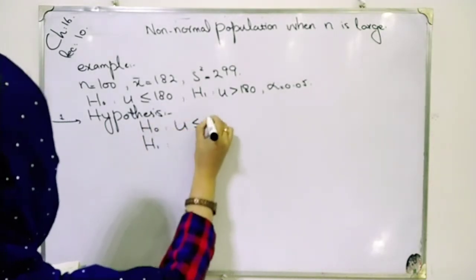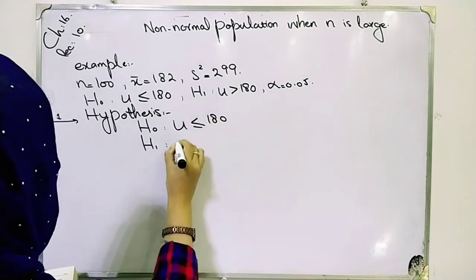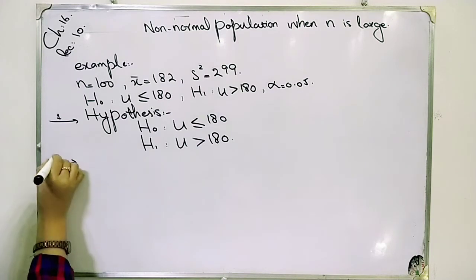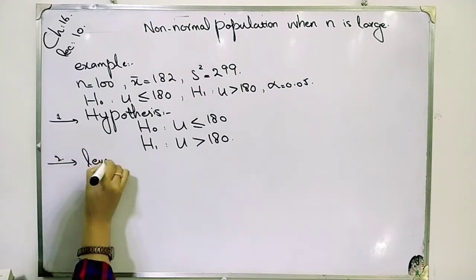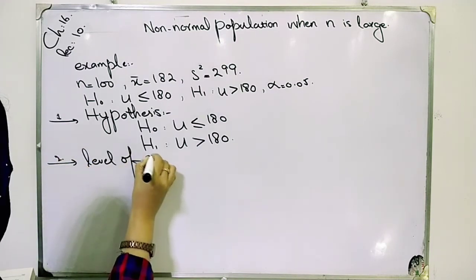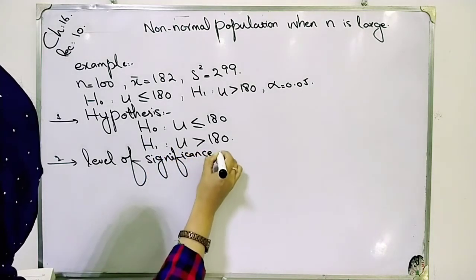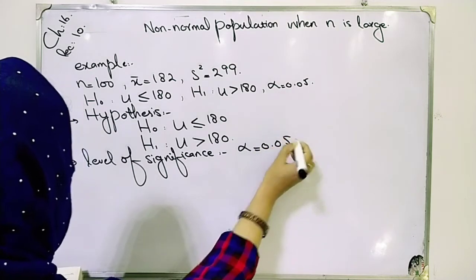Now μ is, we have to see whether we accept or reject the null hypothesis. Second step is level of significance. Level of significance is given as α=0.05.